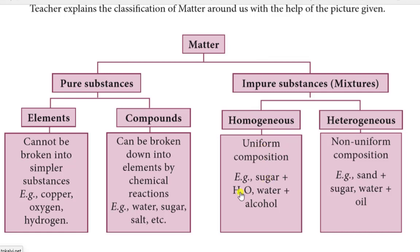Sugar C6H12O6 contains carbon, hydrogen, and oxygen. Salt - sodium chloride. Mixtures can be separated by physical reactions. They are classified into two types: homogeneous mixtures and heterogeneous mixtures. Homogeneous mixtures have uniform composition of the substances, like sugar in water or water plus alcohol. Heterogeneous mixtures have non-uniform composition. You can separate all the components. For example, sand plus sugar, water and oil.